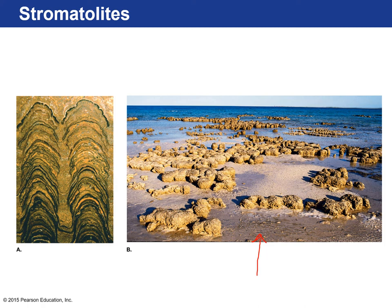Stromatolites still exist today — they were around 3.5 billion years ago and occur as bacterial mats in really shallow water. This is Shark Bay, Australia. They basically build these concentric layered mounds in shallow water with calcium carbonate, and this is the fossil evidence that they existed. These are stromatolites.